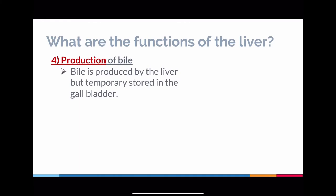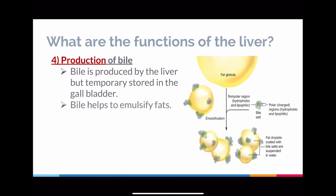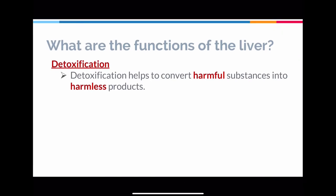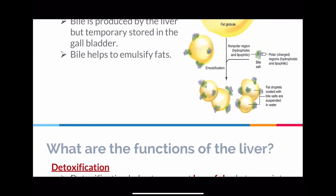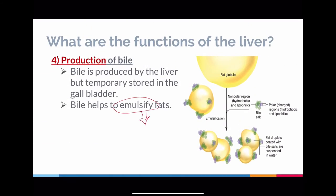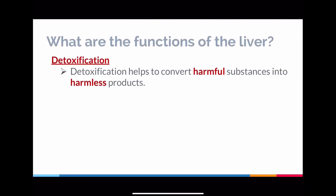The third function — or rather the fourth function — is the production of bile. Remember that the liver is the one that ultimately produces bile, and bile plays a role in emulsifying fats into smaller fatty droplets. This helps to speed up the digestion of fat by the enzyme called lipase.